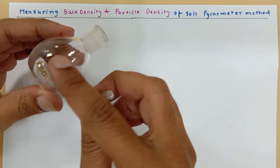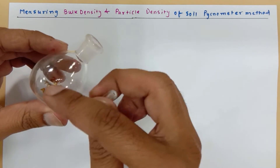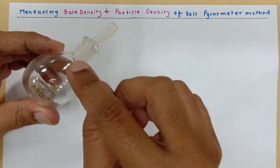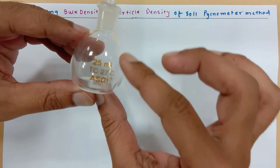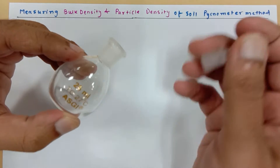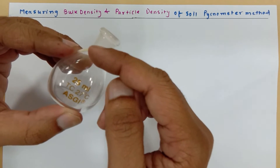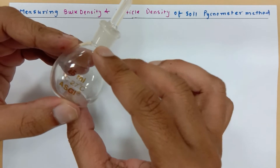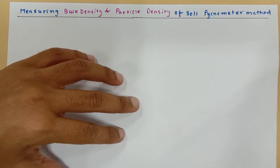When I fill this pycnometer with any liquid to the top and put the stopper, the extra liquid overflows and whatever liquid stays inside is 25 ml. I will ensure that I fill everything till here, and everything would be 25 ml inside. We also know that one centimeter cube is equal to 1 ml.